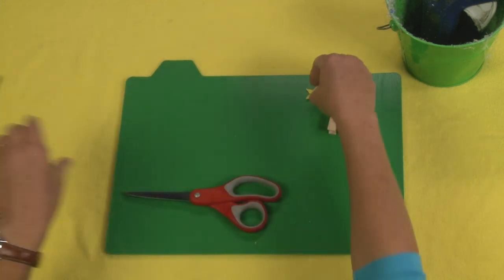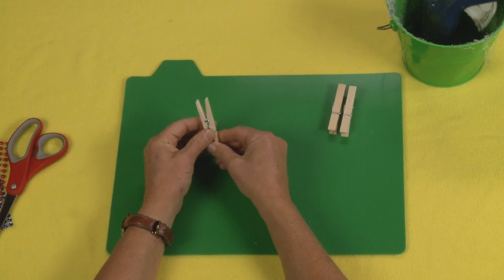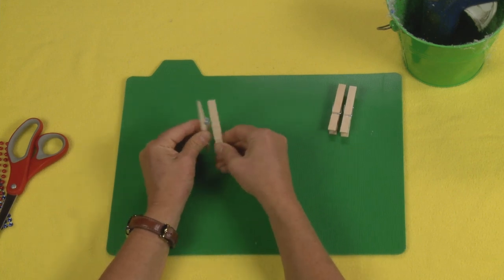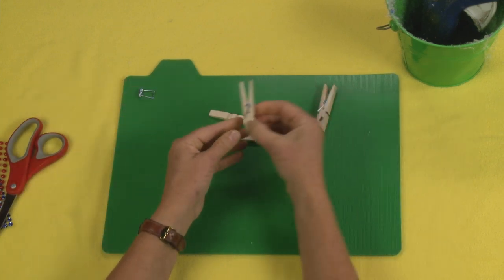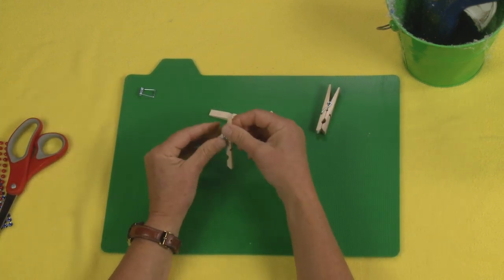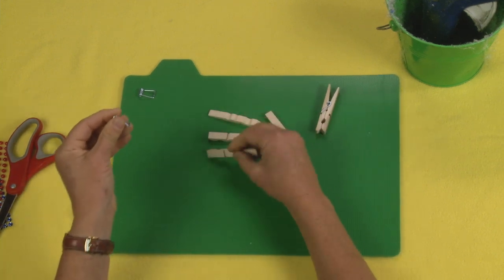First thing that we are going to do is pop apart our little clothespins and they just slip right off like that. So you're just going to take that metal part off. And all you need for this project is actually two clothespins, four halves total.